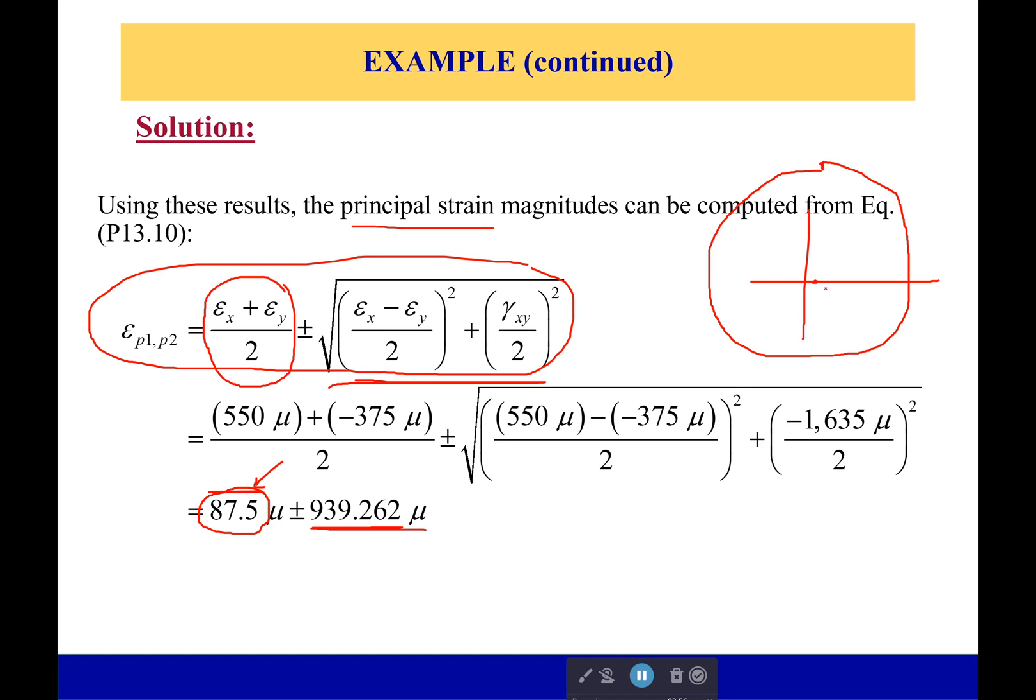And then what we realize is the direction to our principal, our max strain, is we're going to have to change it. So we had a positive x to begin with, and we had a negative y. And we could plot those, figure out what they're going to be on this, and then we would have to rotate by that angle.